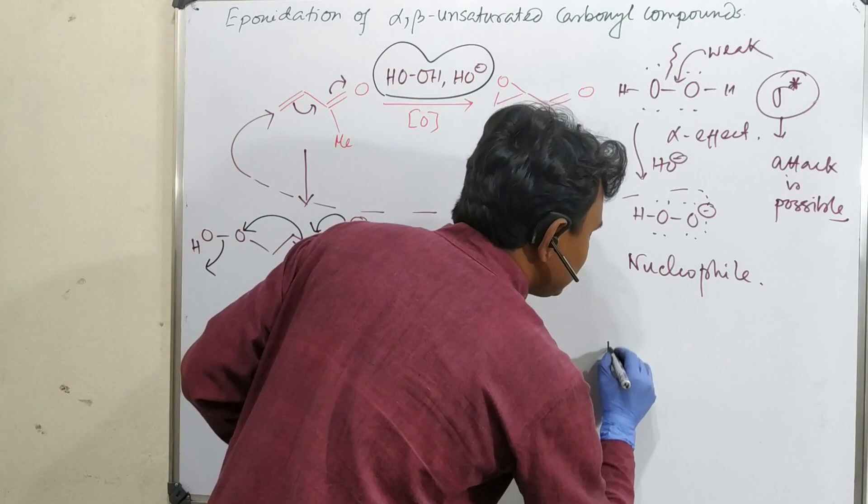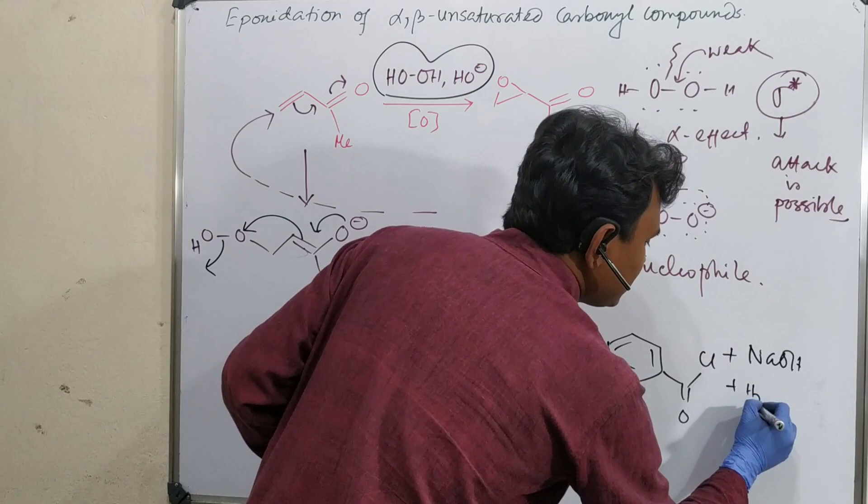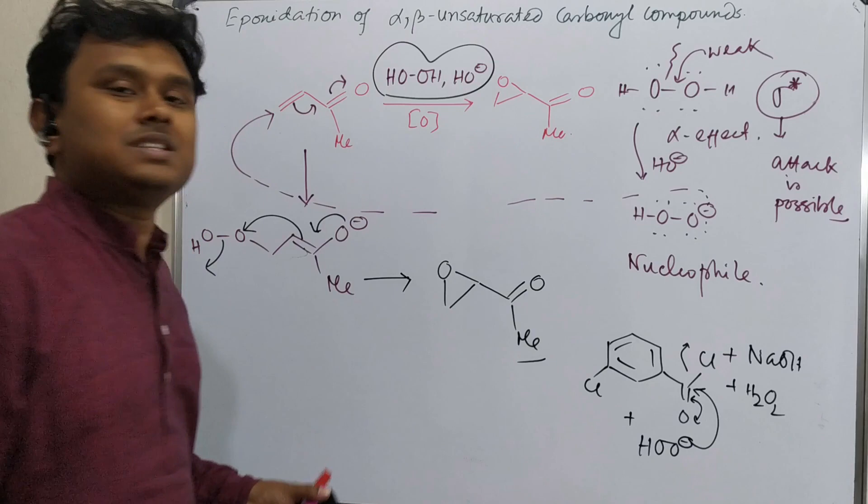By the way, one important information: how are peroxy acids prepared? Peroxy acids are prepared from, for example, MCPBA. This is prepared from this acid chloride plus sodium hydroxide plus hydrogen peroxide. Better to say, what is the active reagent? Active reagent is O minus, which attacks. So in this way, these peroxy acids are prepared.